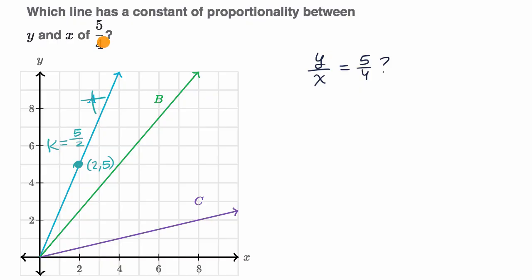We want to get to a constant of proportionality of five-fourths. All right, let's try B. Okay, B, let me find a point on B. It looks like this is a point on B. That is the point four-comma-five. And so in this situation, k would be our y, which is five, divided by our x, which is four. So it looks like B is our choice.